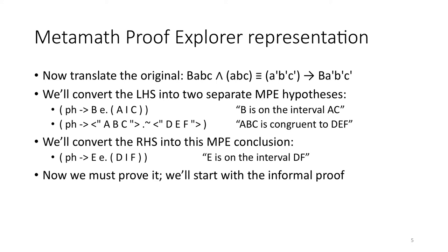Now let's talk about translating the original statement into MPE. The original statement was B ABC and shape ABC congruent A prime B prime C prime implies that B prime is between A prime and C prime. We'll convert the left-hand side into two separate MPE hypotheses. One will say phi implies that B exists in A I C, that B is on the interval A C. And the second is phi implies that A B C congruent with D E F. We'll convert the right-hand side into this MPE conclusion: phi implies E exists in D I F, which is just another way to say E is on the interval D F.